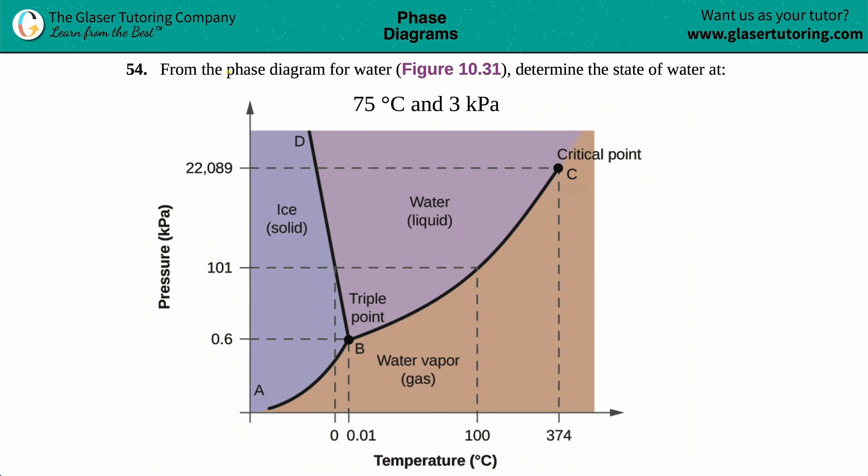Number 54 from the phase diagram for water, which is this figure right here, Figure 10.31: determine the state of water at 75 degrees Celsius and 3 kilopascals. Okay, so we have a graph here. The x-coordinate is temperature in degrees Celsius and the pressure is the y-coordinate, which is in kilopascals. They conveniently gave us the corresponding units, so we have degrees Celsius and kilopascals.